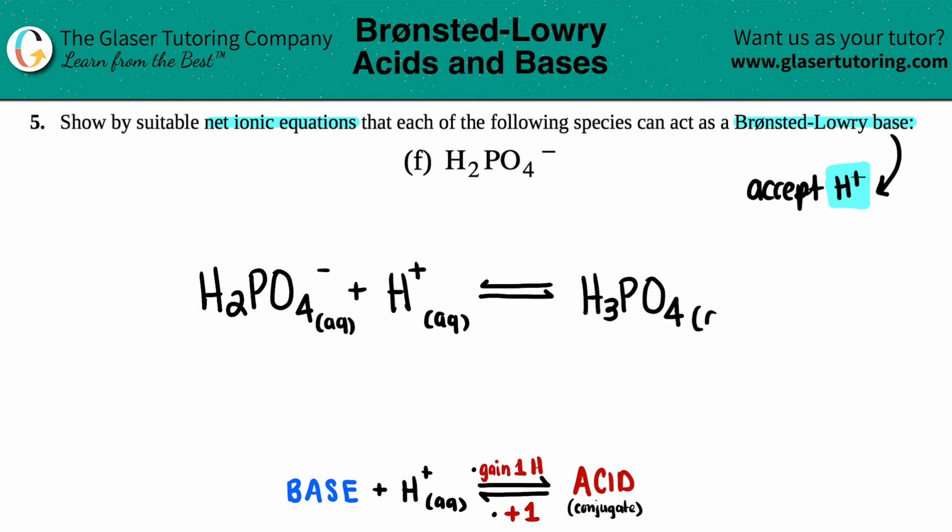Since this is an acid, aqueous. And we're done. That is the net ionic equation to show that H₂PO₄⁻ is a Brønsted-Lowry base.